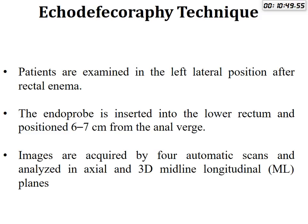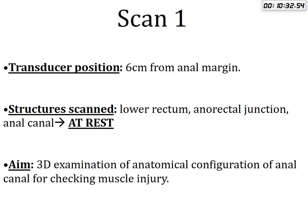The echo defecography, or 3D dynamic endo-anal ultrasound, is performed with the patient in the left lateral position. The probe is introduced into the lower rectum, six to seven centimeters from the anal verge, and images are acquired by four automatic scans analyzed in axial and three midline longitudinal planes. Scan one: the probe is inserted six centimeters from the anal verge to scan the lower rectum at the rectal junction and anal canal at rest.